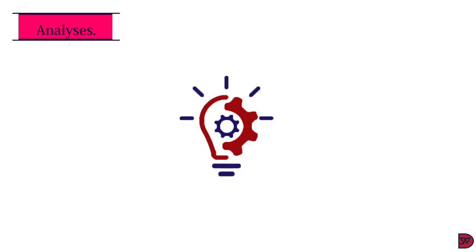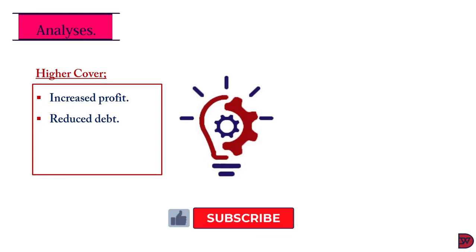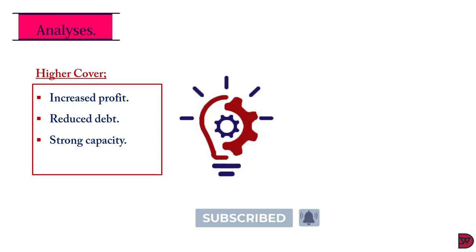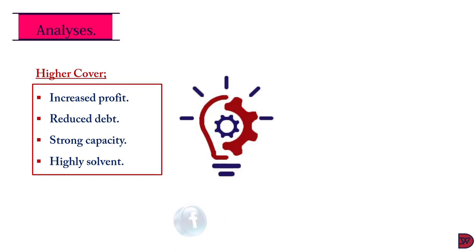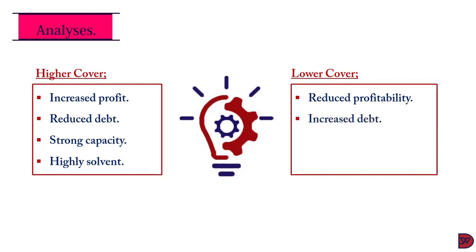When analyzing the interest cover, if you compare it to prior years, industry standards, or competing businesses and it is higher, it means the profit increased while interest stayed static, causing the cover to rise. It could also mean the business had its outstanding debt reducing while profit stayed static — if the denominator reduces, the outcome increases. It also means the business has a strong capacity to handle its debt and is highly solvent with potential for existing into the foreseeable future. On the other hand, if it is lower, it means reduced profitability, increased debt while profit stayed static, a weaker capacity relative to the loan, or that the business is experiencing financial problems.